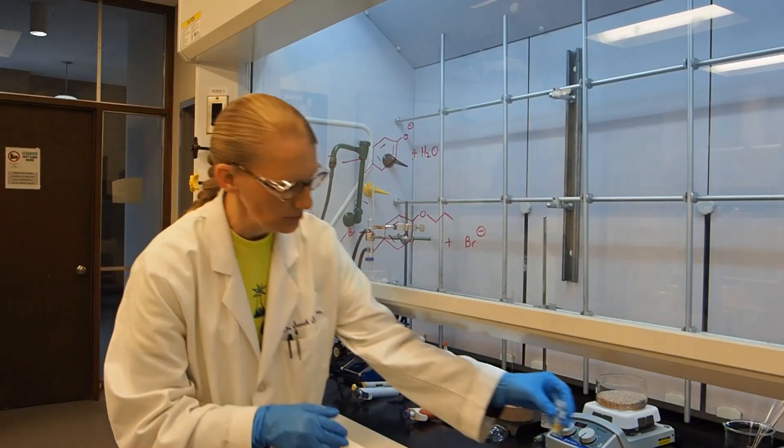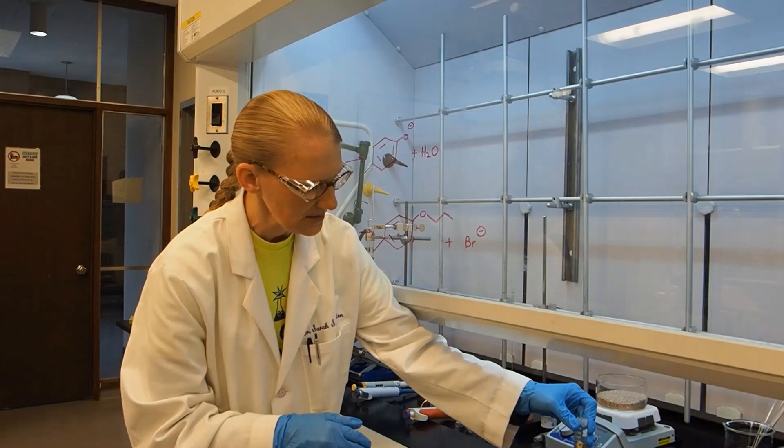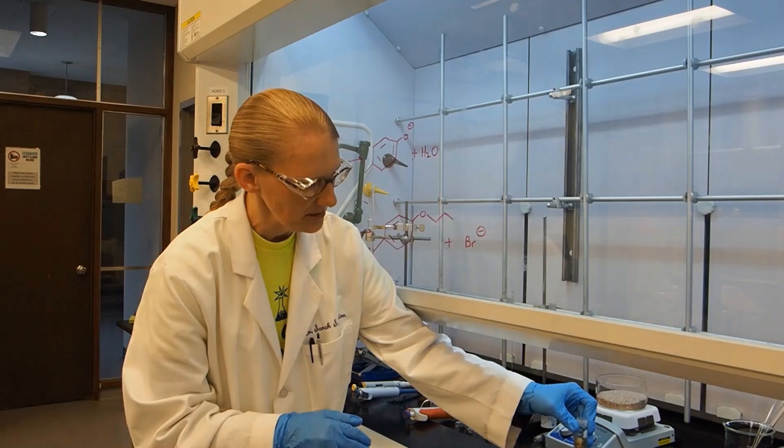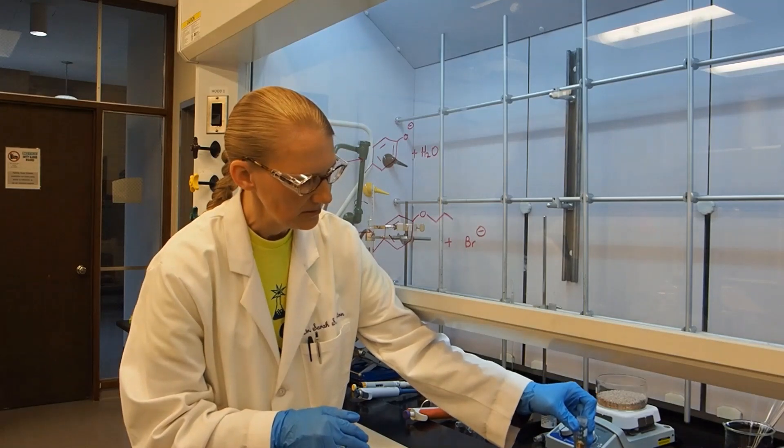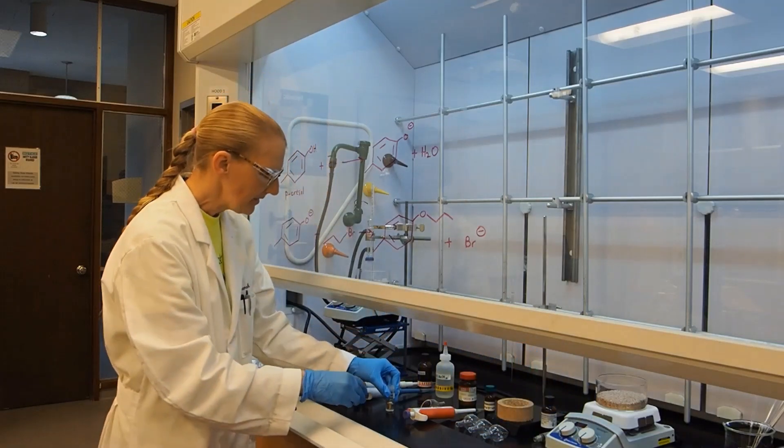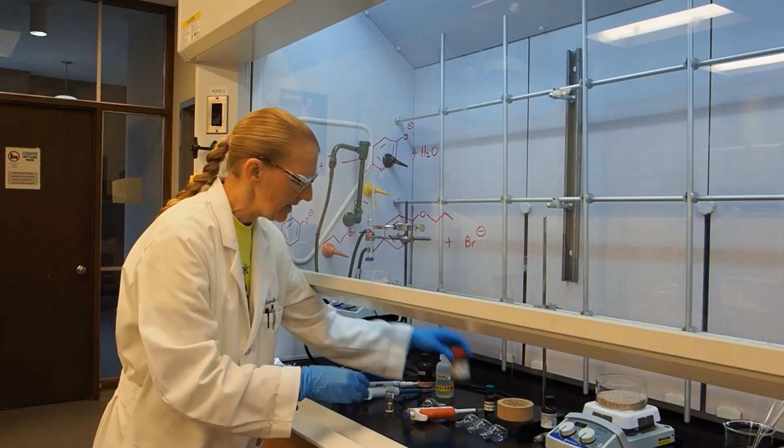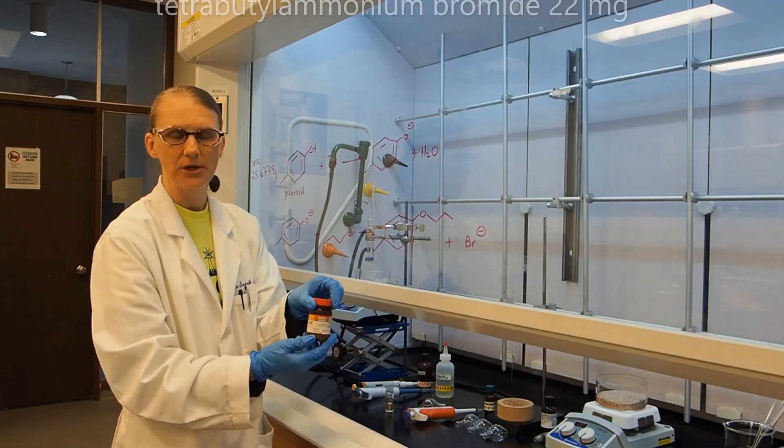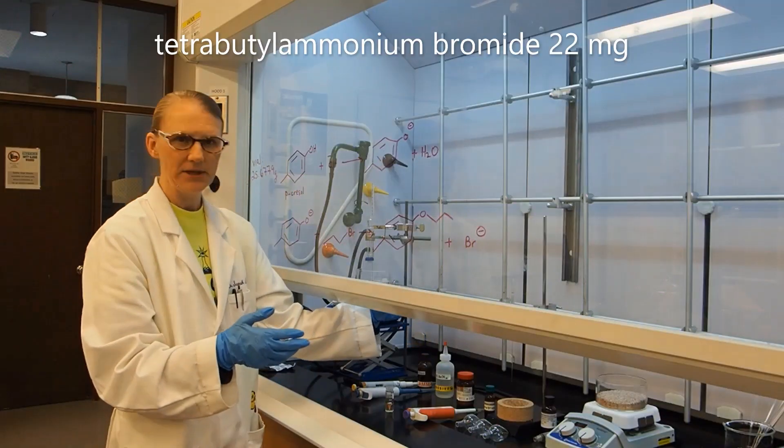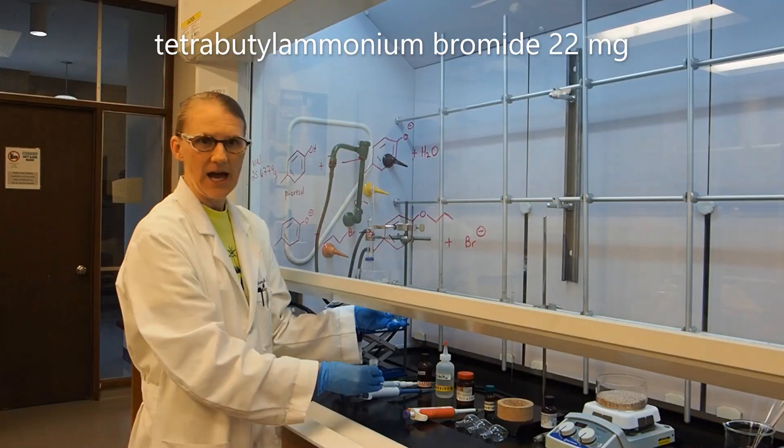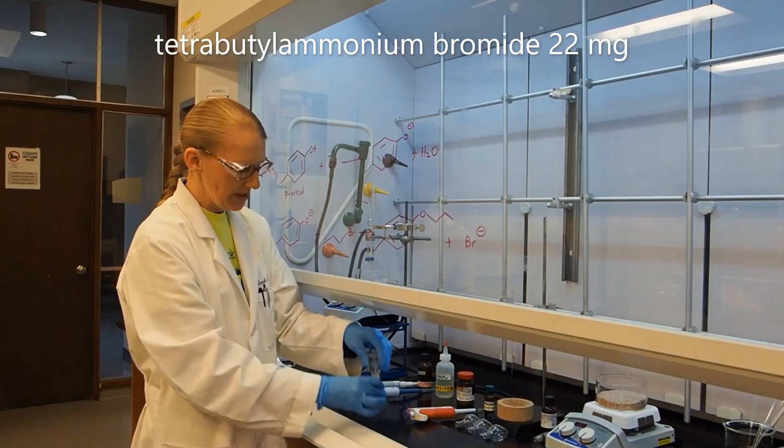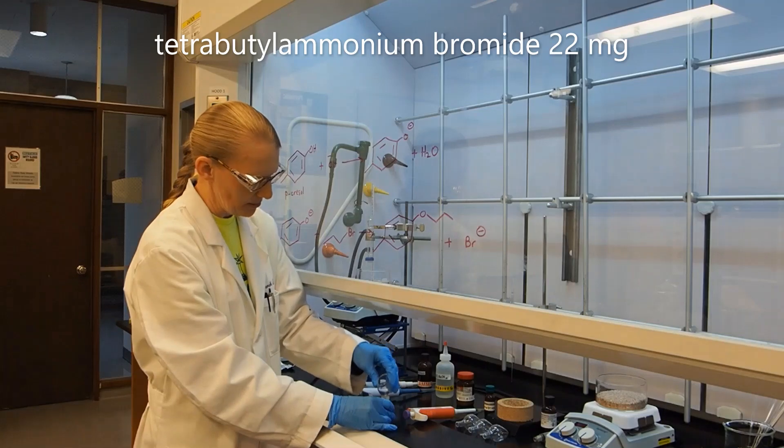After this step I'm going to vortex mix so that it mixes up a little bit. The next thing I'm going to do is add the tetrabutylammonium bromide, which is the phase transfer catalyst. I've already measured that out with the balance. You're supposed to add 18 milligrams. This is about 22, so it's a little bit extra, but some of that's probably going to stick to my glass weigh boat anyway.